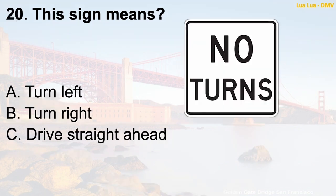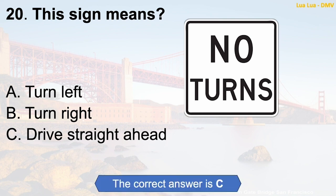Question 20: This sign means — A. Turn left. B. Turn right. C. Drive straight ahead. The correct answer is C: Drive straight ahead.